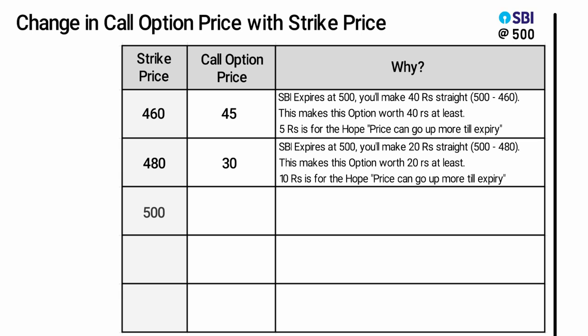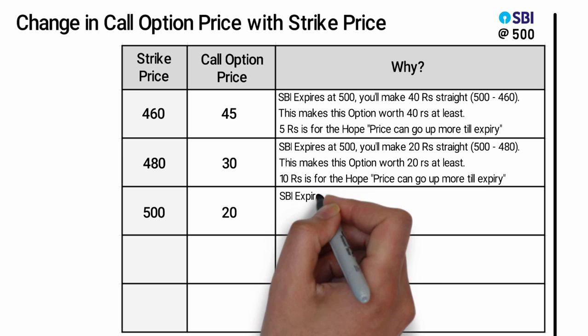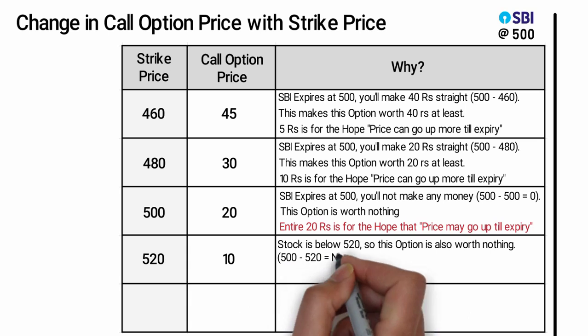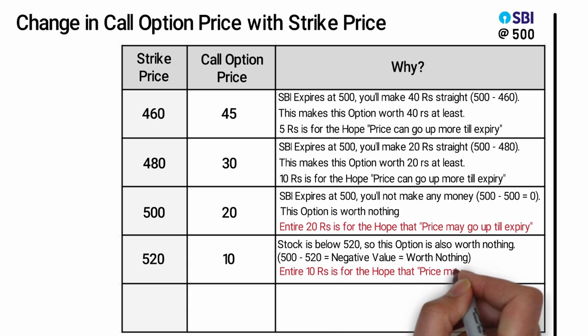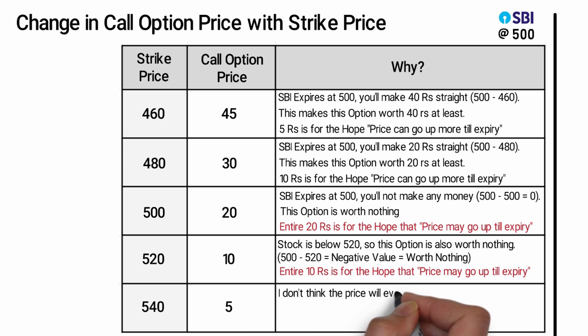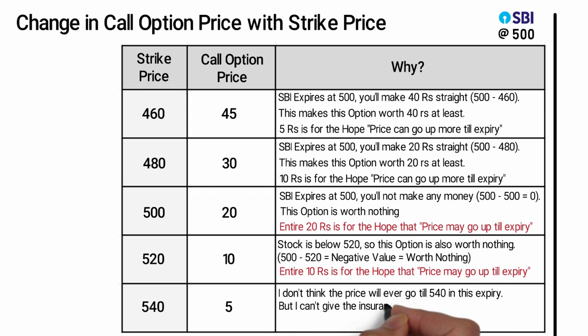For the 500 strike price, I'm charging 20 rupees — pay close attention. The stock is at 500, so the entire 20 rupee price is for the hope that SBI may go up more till expiry. For the 520 strike price, I'm charging 10 rupees. The stock price is below the strike, so the option is worth nothing straight away — the entire 10 rupees is for the hope that SBI may go up till expiry. As there are fewer chances the price will go this high, I'm charging less premium. For the 540 strike, I'm charging only 5 rupees. I don't think the price will ever go to 540 in this expiry, but I can't give the option for free, so I'm charging a nominal premium of 5 rupees.